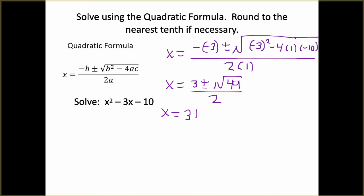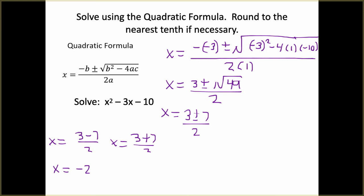So we have 3 plus or minus 7 over 2. We have two different equations: 3 minus 7 over 2, and 3 plus 7 divided by 2. These are x equals — these are our intercepts, where the graph crosses the x-axis. This simplifies to negative 4 over 2, which is negative 2, and 10 over 2, which is 5. So these are my solutions.